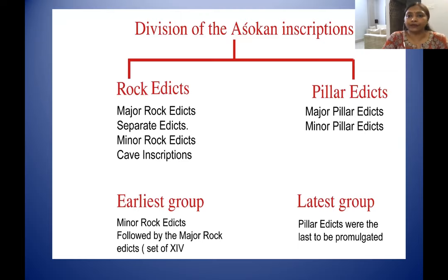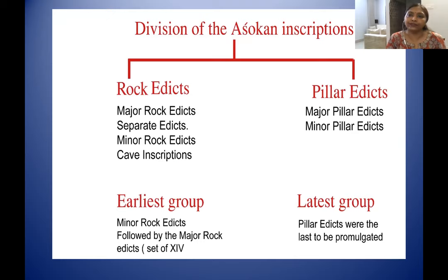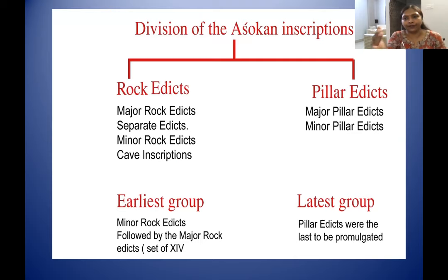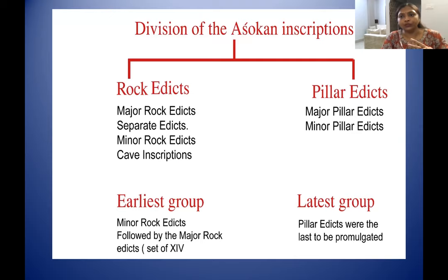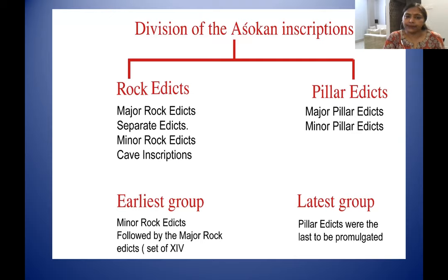Broadly, the Ashokan inscriptions can be divided into two categories: first, the rock edict category — those engraved on rocks — and second, those engraved on pillars. Among inscriptions engraved on rocks, we have major rock edicts, a set of 14 documents engraved together, and there are separate edicts not found in this set of 14. These two separate edicts are engraved as an addendum to the major rock edicts and are also called Kalinga edicts.